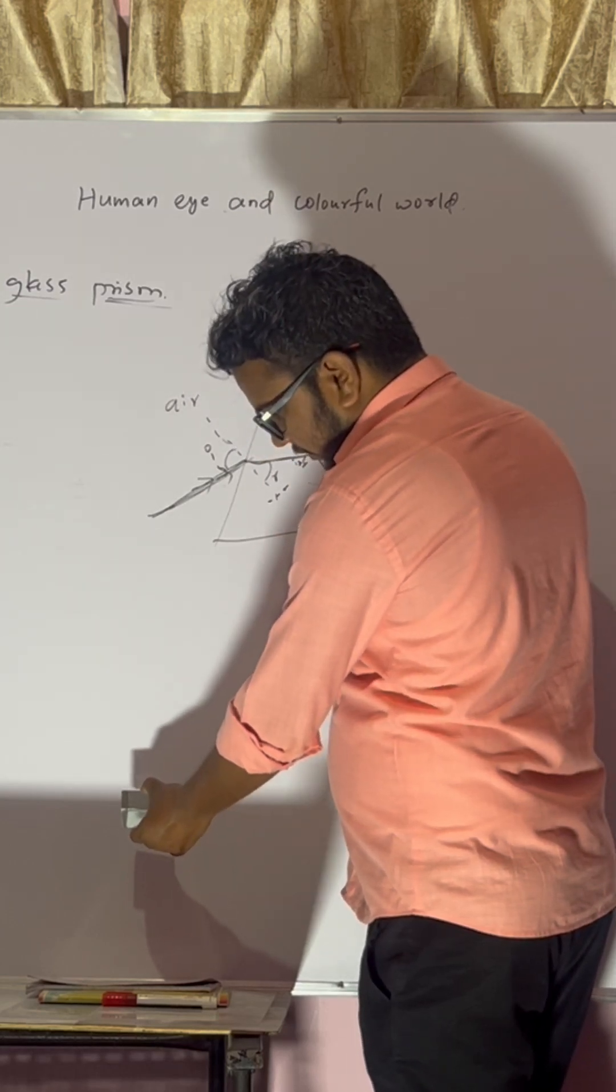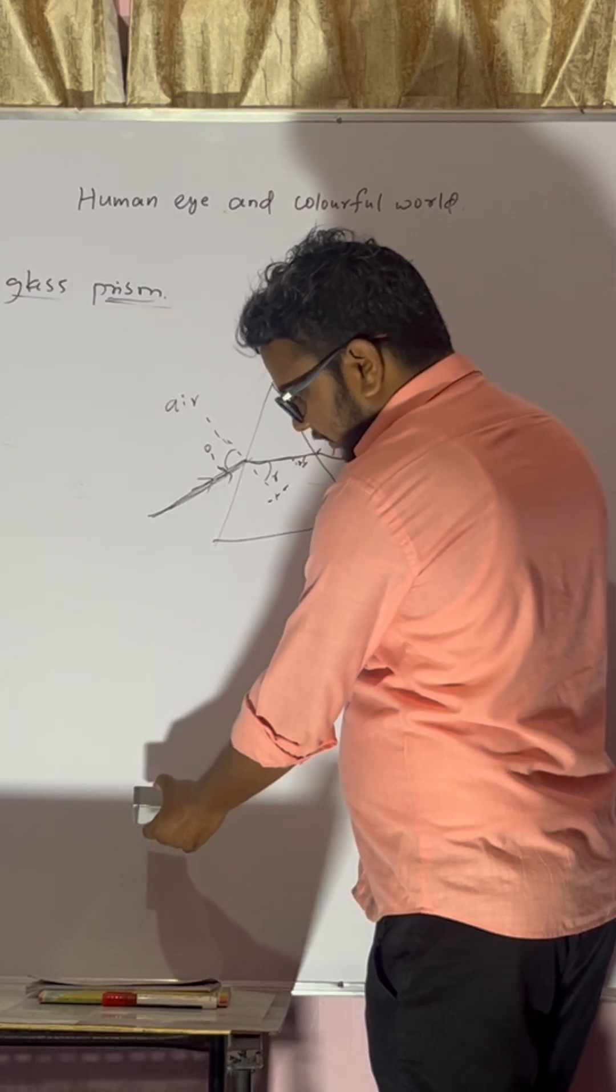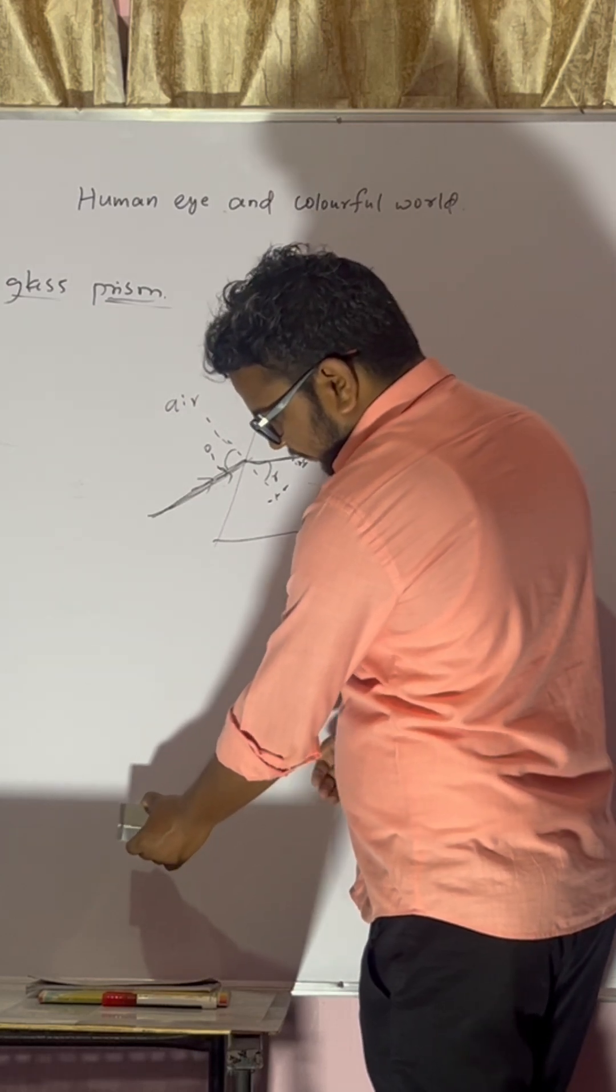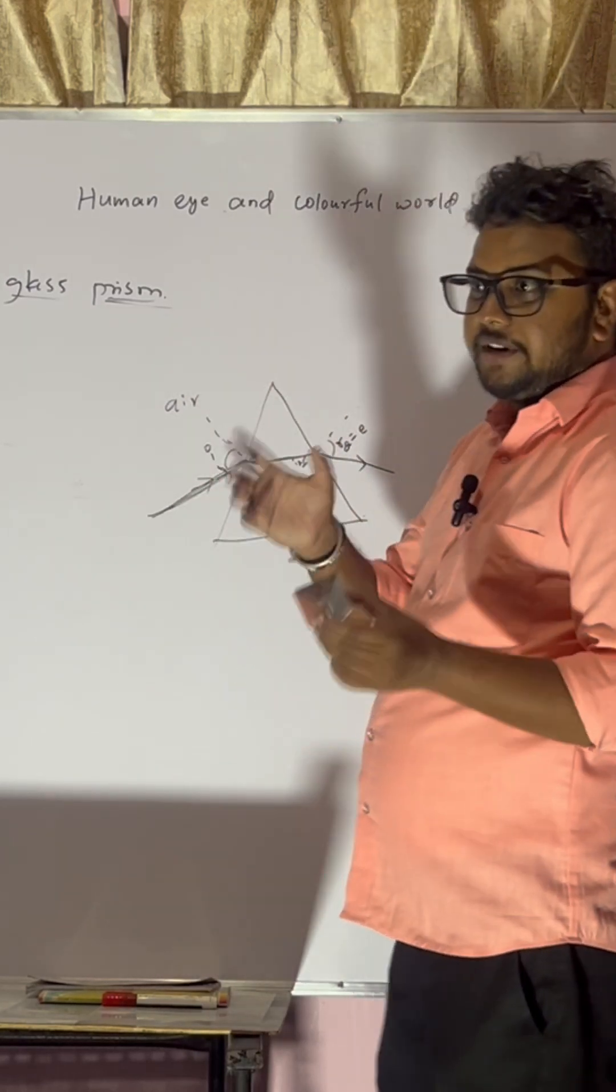Blue is there, red is there, somewhat yellow is there. All these lights are splitting. So this is called as dispersion. Splitting of white light.